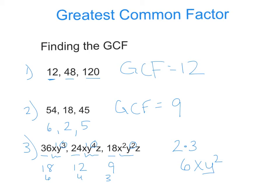And then, there is no z in the first one, so I can't have any z's. So, my answer for greatest common factor is going to be 6xy squared.